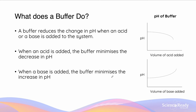So what does a buffer do? A buffer reduces the change in pH when an acid or a base is added to the system — it minimises pH changes if we add an acid, and it minimises pH changes if we add a base. Looking at the graphs on the right-hand side, the top one demonstrates what happens to the pH as we add an increasing volume of acid. Normally we would expect a steep change in pH, but what we actually see is that when a small amount of acid is added, the pH changes very slightly. But when we add a large amount of acid, the pH will suddenly start to decrease at a steep rate.